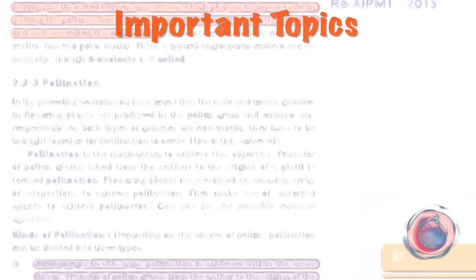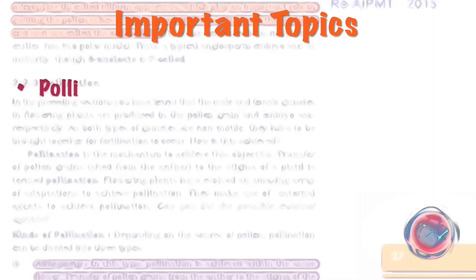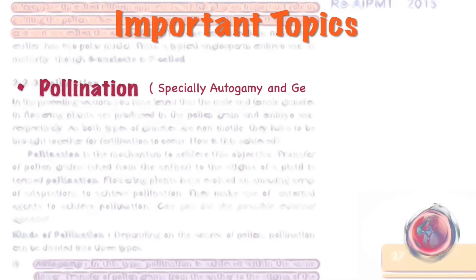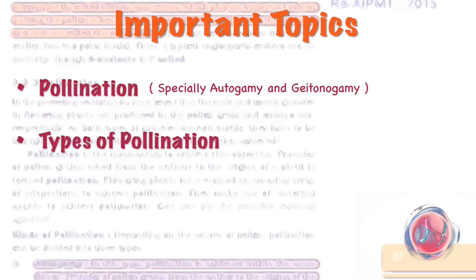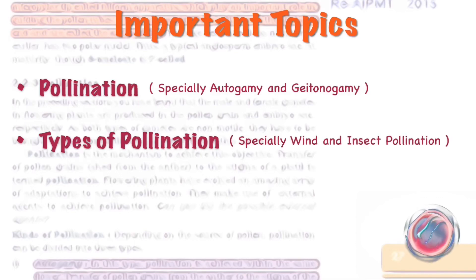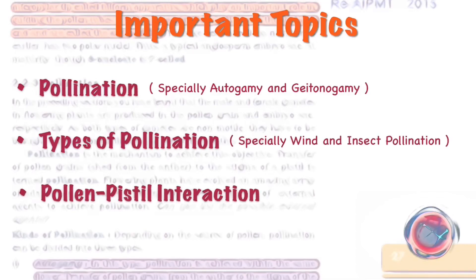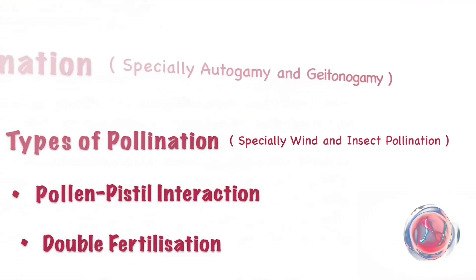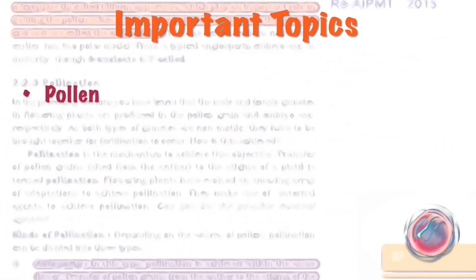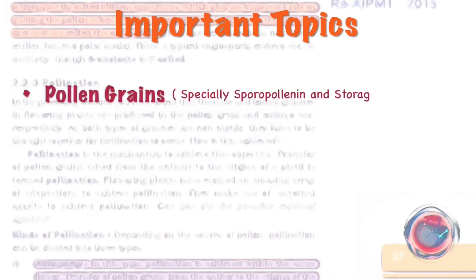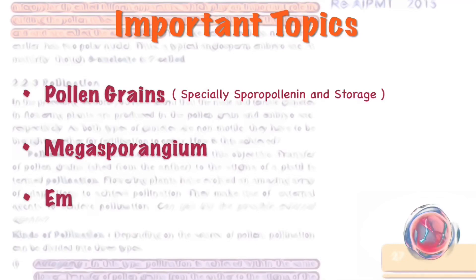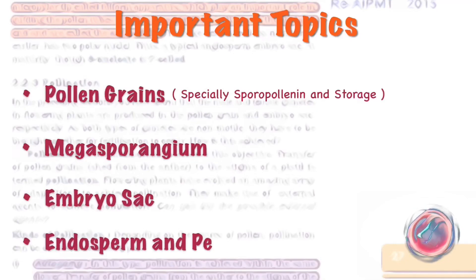The important topics of this chapter — sexual reproduction in flowering plants — are: Pollination, especially autogamy and gitanogamy; types of pollination, especially wind and insect pollination; pollen-pistil interaction; double fertilization; pollen grains, especially sporopollenin and storage; megasporangium; embryo sac; and endosperm and perisperm.